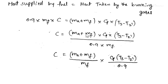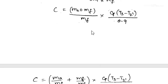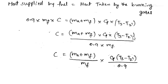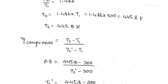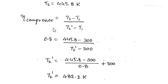By rearranging this equation we can find MA/MF by substituting all known values. Before that, we need T3 and T2'. T3 is already given as 1148 K. To find T2', we use the isentropic efficiency of the compressor formula, which requires T2. T1 is given as 300 K, so we need to calculate T2 first.